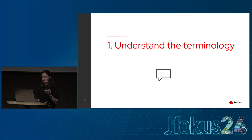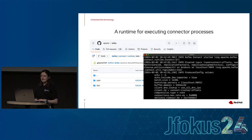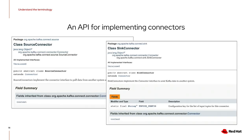In getting started, I'll first talk about some terminology. Kafka Connect provides a runtime for executing connector processes — like Kafka, it's primarily written in Java and is open source. But Kafka Connect isn't just a runtime; it's also an API for implementing connectors. If you want to write your own connectors and don't want to just use the configuration option, you can do that using the Java API, which is actually pretty straightforward. In the book we go into exactly how to write your own connector.